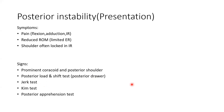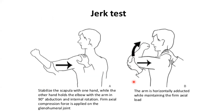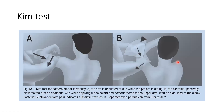Examination for posterior instability: posterior load-and-shift test, posterior drawer test, jerk test, Kim test, and posterior apprehension test. The jerk test: stabilize one hand on the scapula, hold the elbow with the other, abduct the arm to 90 degrees with internal rotation, apply firm axial force toward the glenohumeral joint, then horizontally adduct while maintaining axial force — you can feel the shoulder move posteriorly. The Kim test is similar to the jerk test but angled 45 degrees downward, with the hand applying downward and posterior force on the upper arm instead of stabilizing the scapula.